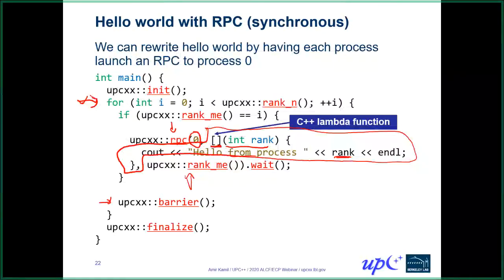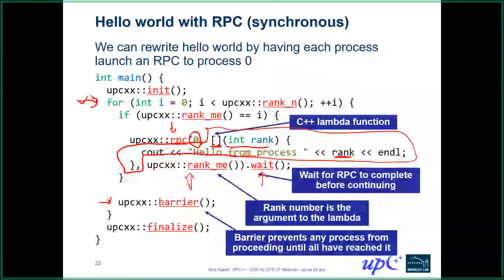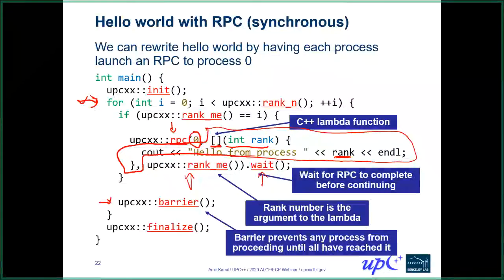Because everything is asynchronous, by default RPC doesn't wait until completion before the call returns. In order to wait, we have to explicitly call wait. So we initiate the RPC, then wait for it, then do the barrier afterwards — this ensures everything is synchronized correctly.